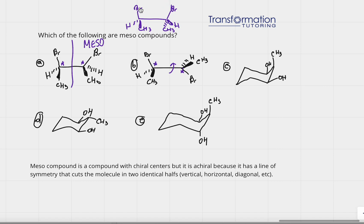Now that everything is aligned — bromine with bromine, hydrogen with hydrogen, methyl with methyl — is there a line of symmetry? No, there isn't. This hydrogen is on a dash but this one is on a wedge; this methyl is on a wedge but this one is on a dash. So this compound is not a meso compound.